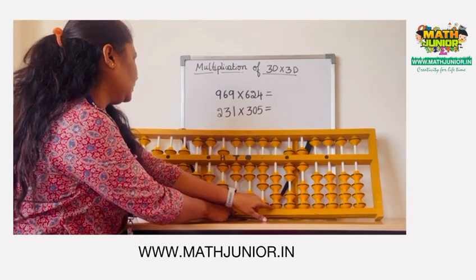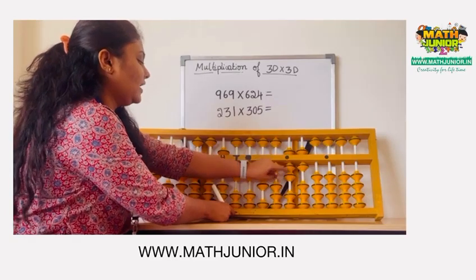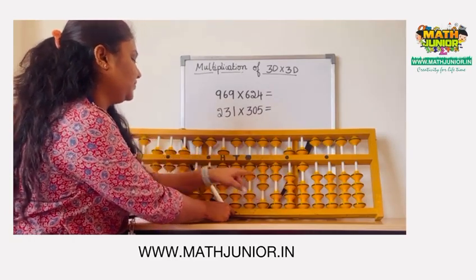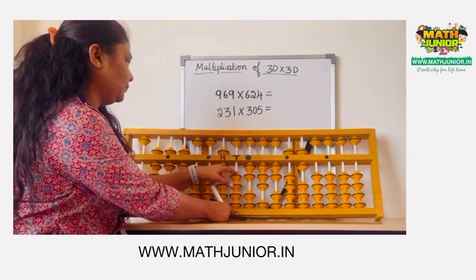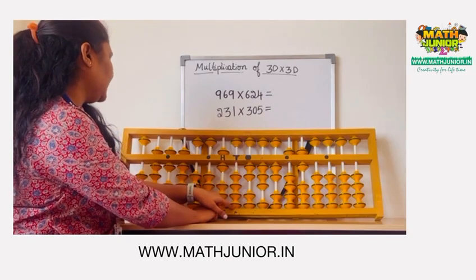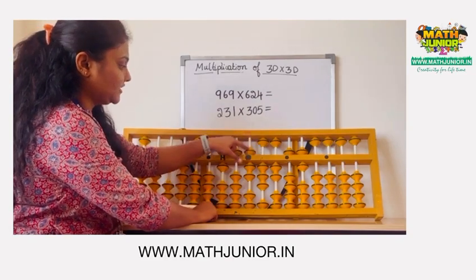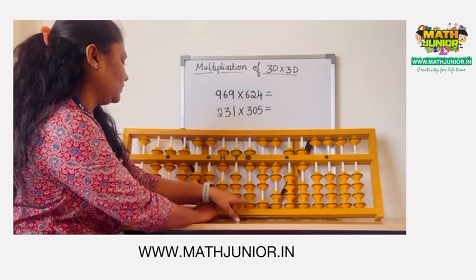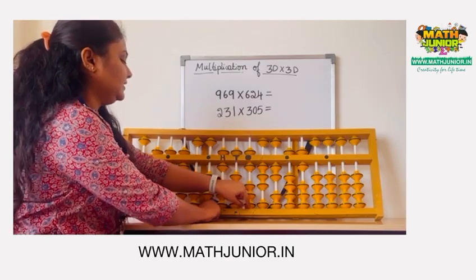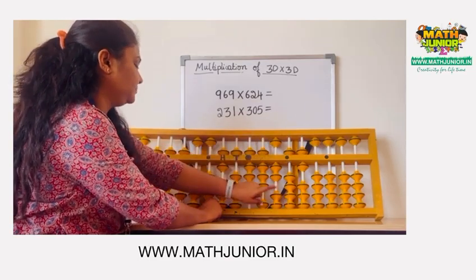Next, 2 times 9 is 80. 1 and 8 is plus 10 and minus 2. Then remove 2. Next, 6 times 9 is 54. 60 and 4 is plus 5 and minus 1. 6 times 6 is 36 — 30 and 6.